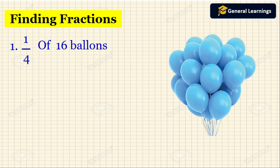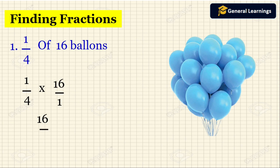Let us see another one. They have given 1 by 4 of 16 balloons. First we write 1 by 4 as it is, then multiply. If the whole number does not have a denominator, we consider it as 1, so 16 by 1. Multiply the numerators: 1 into 16 is 16. Multiply the denominators: 4 into 1 is 4. Now we divide 16 by 4 and we get 4. So 1 by 4 of 16 is 4.